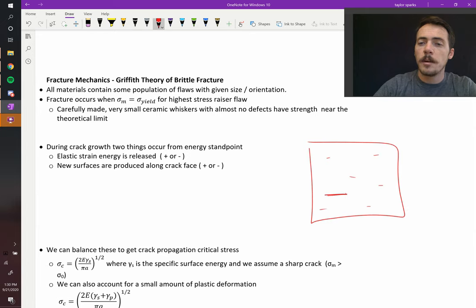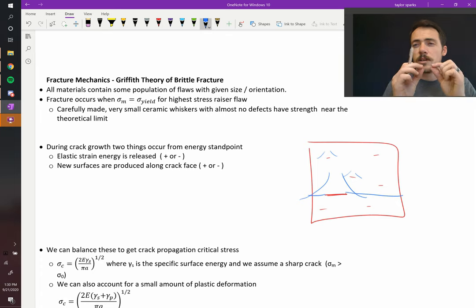But one flaw might be the largest and the most severe of all of them. So even though all of these would experience some stress magnification in their vicinity of the crack tip, this one's going to experience the largest stress magnification. Therefore, it's the one that's eventually going to fracture. That crack is going to be the one that grows all the way across.